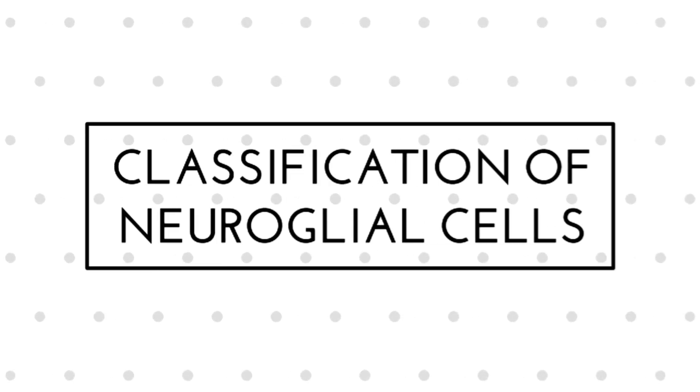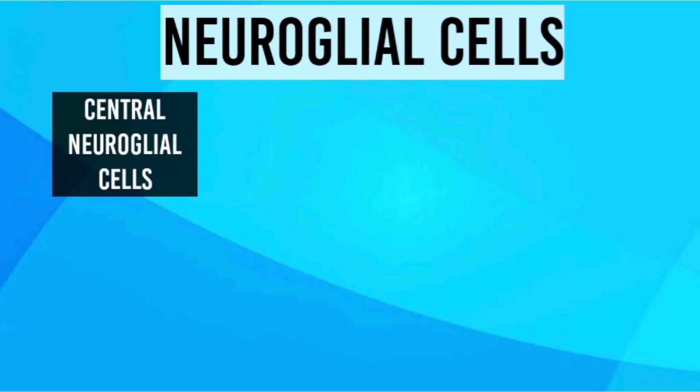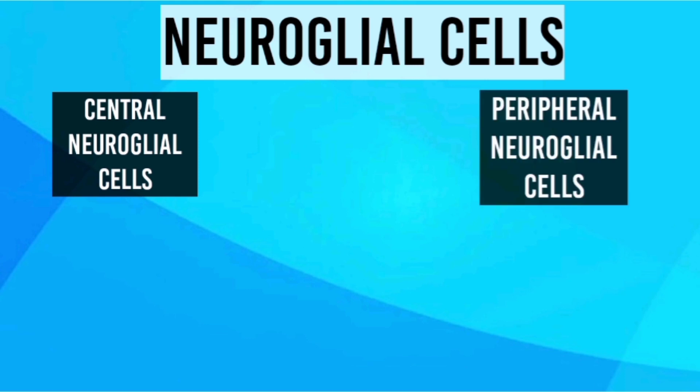Classification. The neuroglial cells are distributed in the central nervous system as well as the peripheral nervous system, and are accordingly called central neuroglial cells and peripheral neuroglial cells.